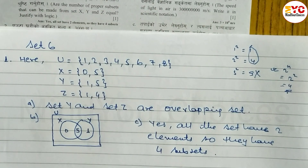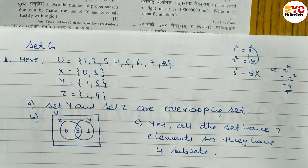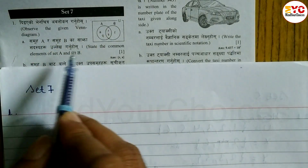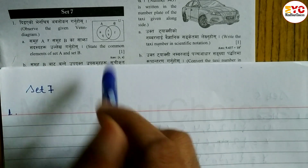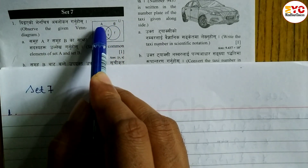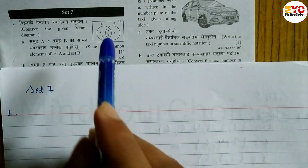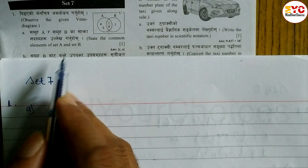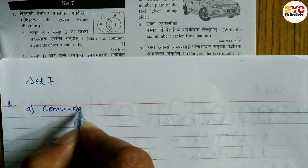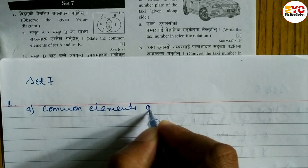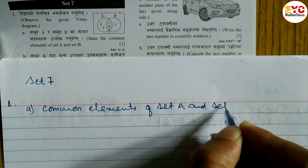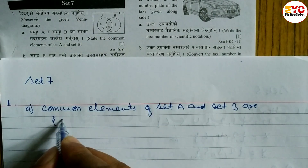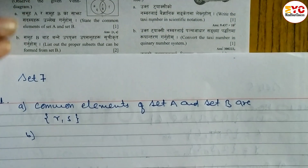Hope you understand question number 1 from set 6. Now look at question number 1 from set 7. Look at here — observe the given Venn diagram. Number A: state the common elements of set A and B. Common elements are the ones present in both set A and set B. Looking in the middle, the common elements are R and S.